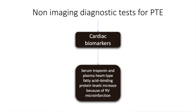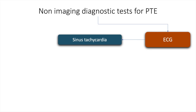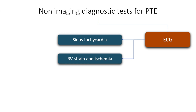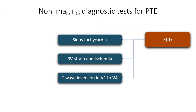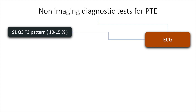Cardiac biomarkers such as serum troponin and plasma heart-type fatty acid binding protein may increase due to RV microinfarction. The electrocardiogram would show features of sinus tachycardia, right ventricular strain and ischemia, and T-wave inversion in V1 to V4. An often-quoted feature of pulmonary thromboembolism is the S1Q3T3 pattern, seen in 10 to 15% of individuals.